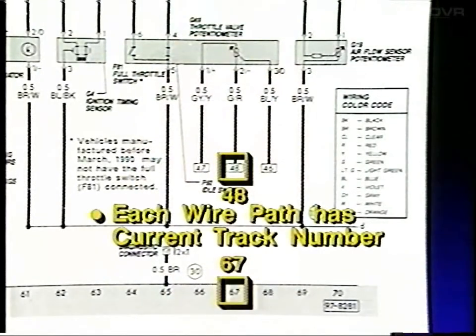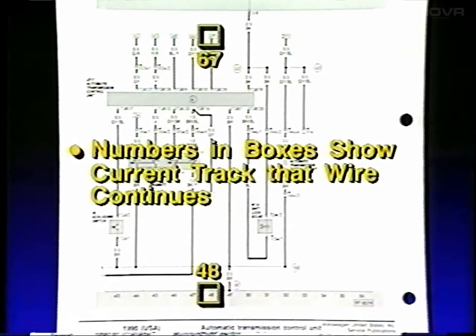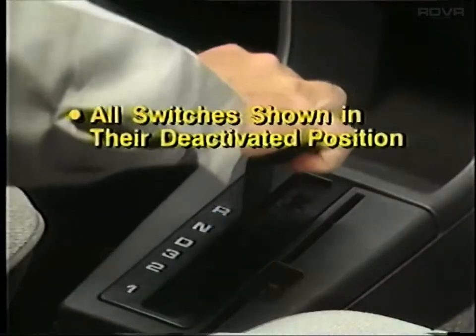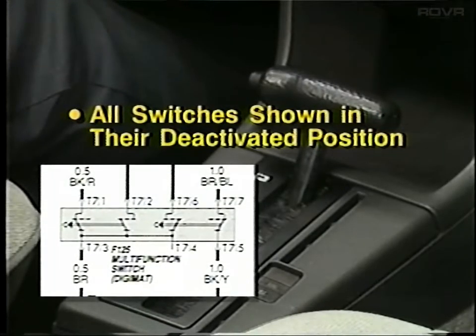Now let's review the things we have just covered. Current track numbers are used at the bottom of the page for each vertical wire path and are used to locate components within the diagram. A number with a box at the end of a wire shows which current track that wire continues in. All switches and relays are shown in their off or deactivated position.